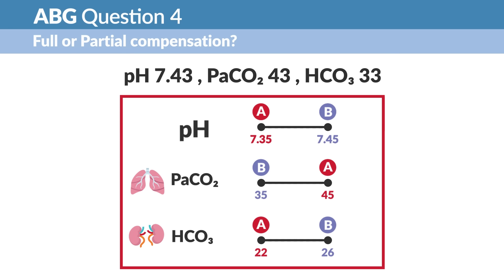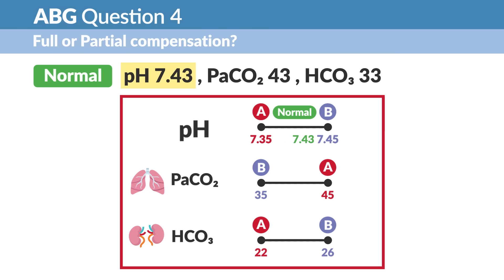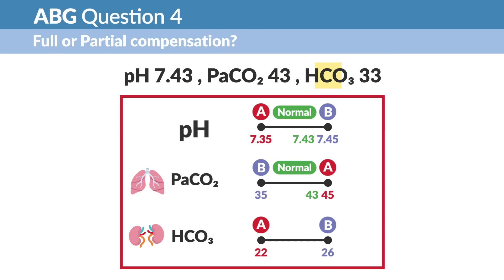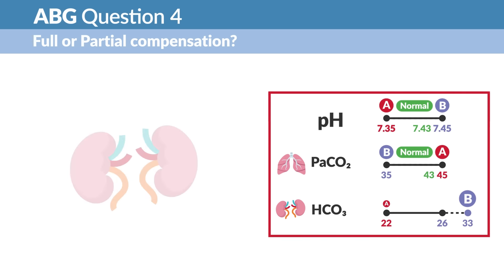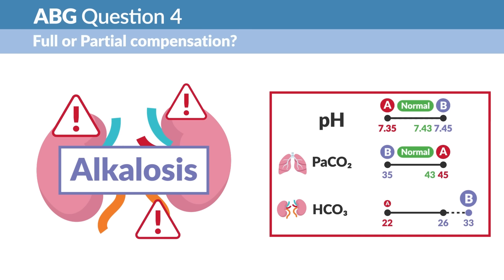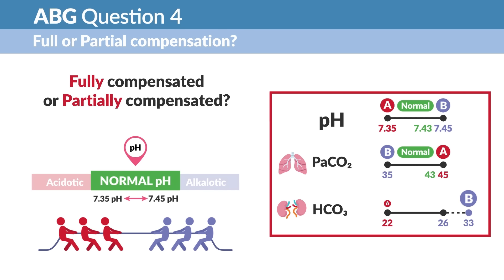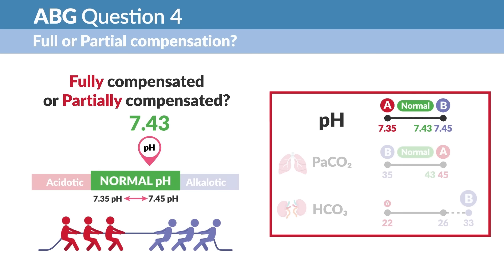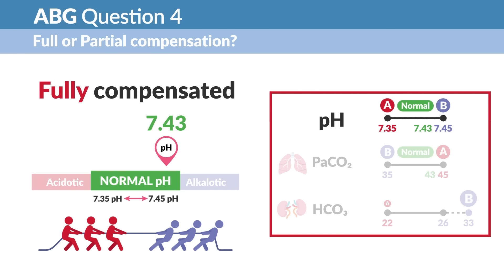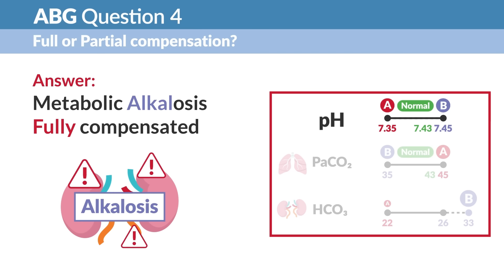ABG compensation question four: pH 7.45, CO2 43, HCO3 33. Step one — pH is in normal range, but closer to the base side, so base is winning. Step two — CO2 is in the acid range, so no match. HCO3 is 33 — definitely base side — metabolic alkalosis since the bases match. Step three — pH is fully normal, so it's fully compensated. Answer: metabolic alkalosis, fully compensated.